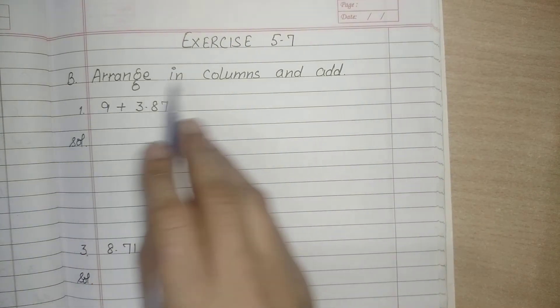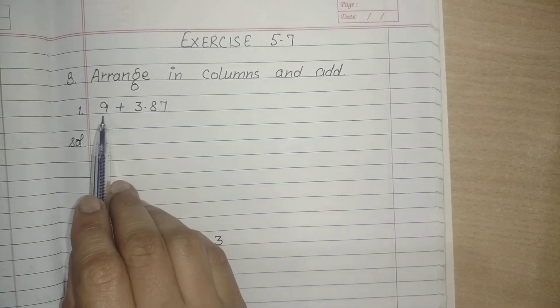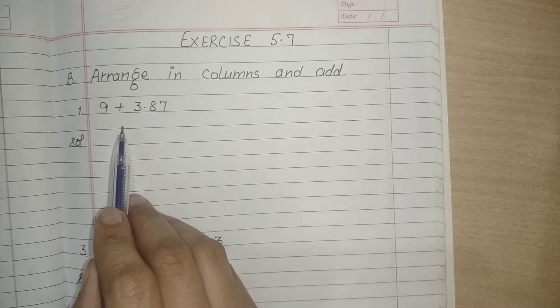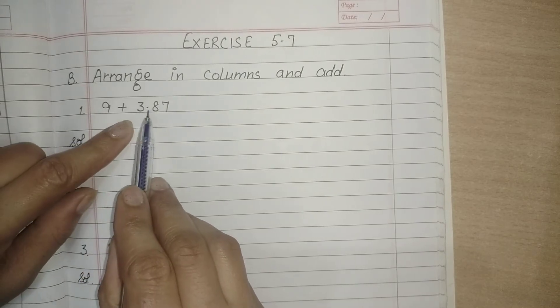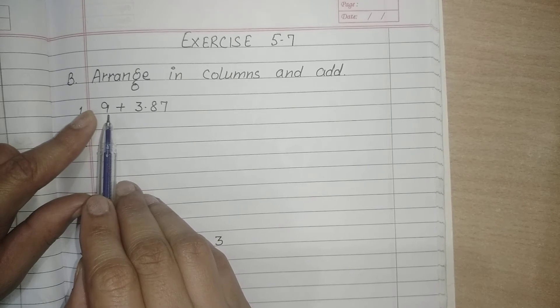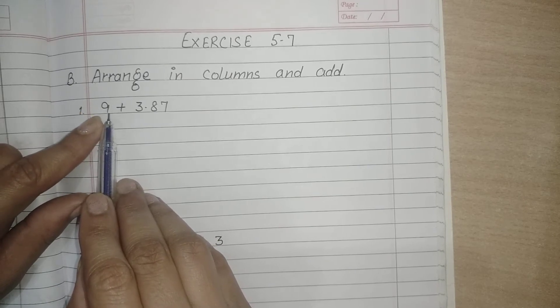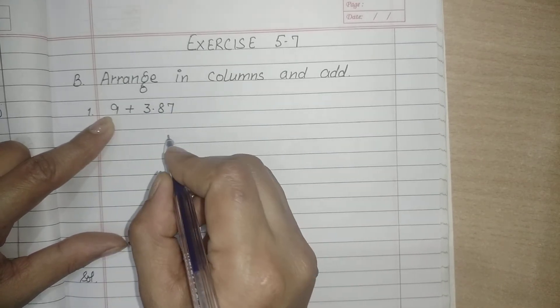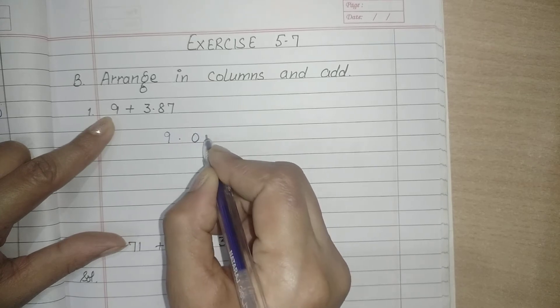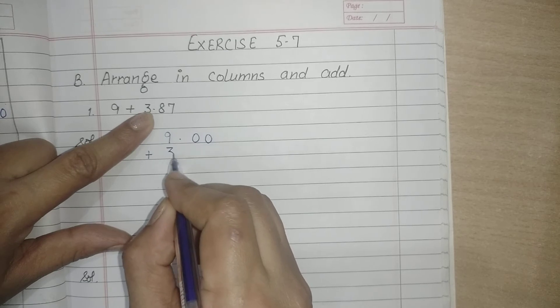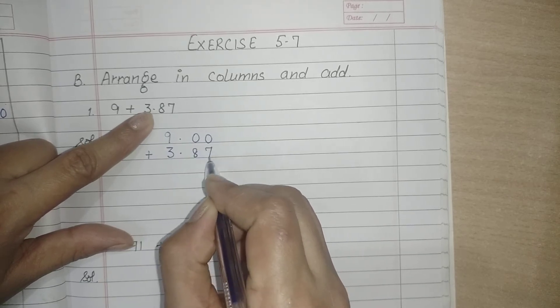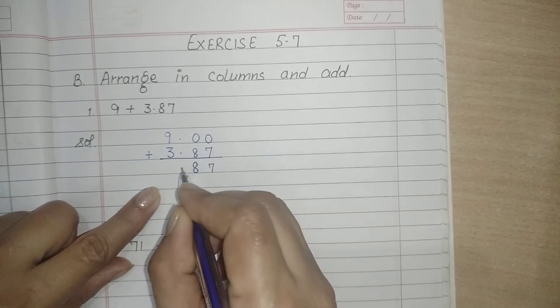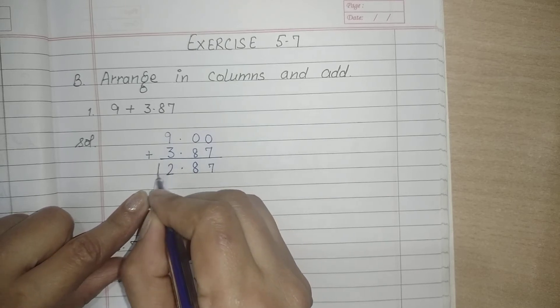Next is question number B: arrange in columns and add. Here the numbers are given horizontally. First we will arrange the numbers in columns and then we will add. Here you can see it is 9 and this is 3.87. First step is we will convert the decimal number into like decimals. 9 we will write as 9.00, then plus 3.87. Now add it: 0 plus 7 is 7, then 0 plus 8 is 8, then point, 9 plus 3 is 12. So the answer is 12.87.